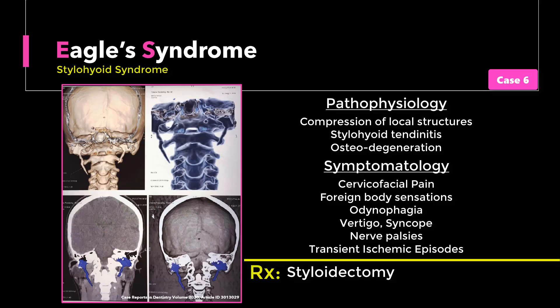Remember that there is frequently a delay in arriving at a definitive diagnosis, by which time long-term decompressive damage may have already occurred. Eagle Syndrome is an uncommon cause of facial pain, so it does not always come up early in the list of differential diagnoses. The 20% of patients who do not achieve full cure may benefit from medical neuromodulatory therapy such as gabapentin, duloxetine, or pregabalin.